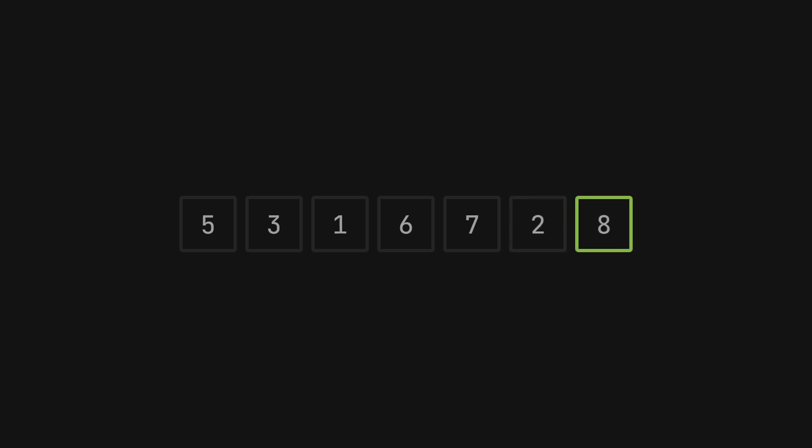And finally compare 8 and 2 and swap them. We now have the largest number at the end of our array. Since our array is not sorted yet, we start again from the beginning. I will just let the algorithm run until it's done.